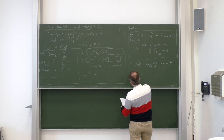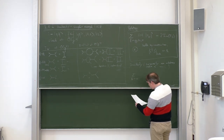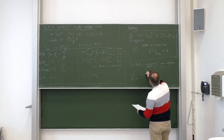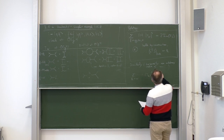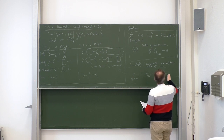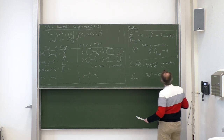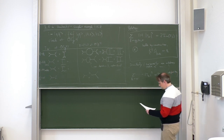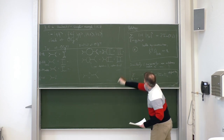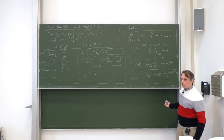Writing this down: the sum over all ghost-anti-ghost final states, which have negative norm, so with a minus sign, gives: −|T_fi|² = 2 Im(T_ii), where the right-hand side contains only the ghost loop. This relation is also valid.